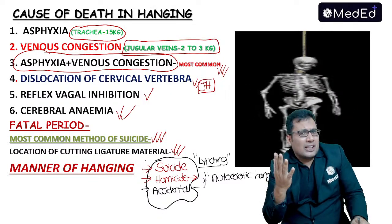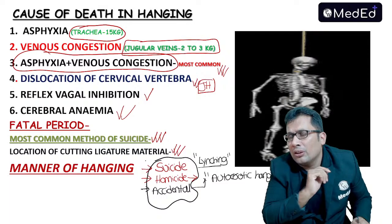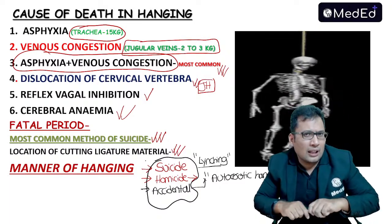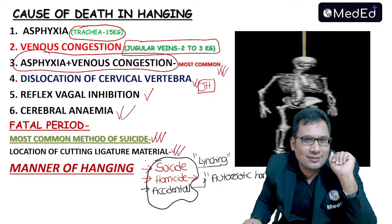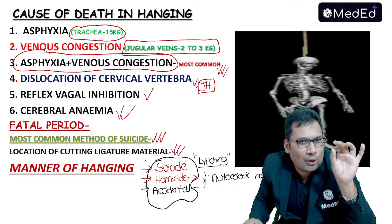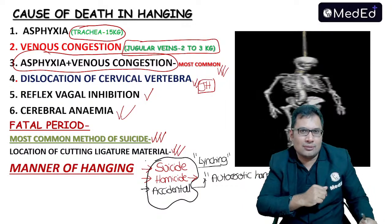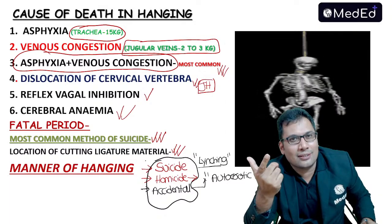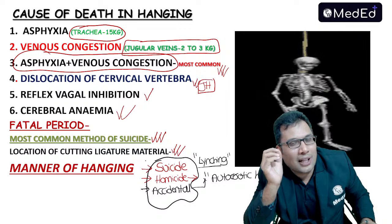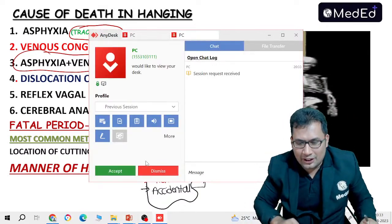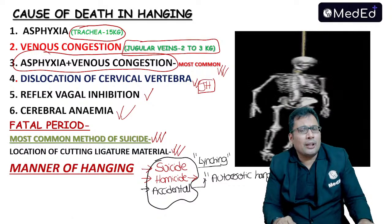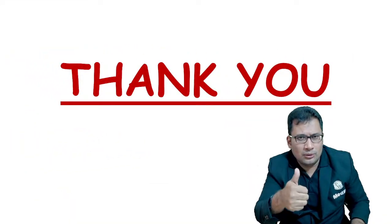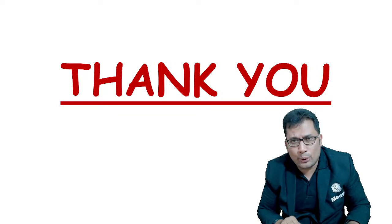To summarize key high-yield points: the surest sign of antemortem hanging is dribbling of saliva. The most important finding in antemortem drowning is cadaveric spasm with aquatic vegetation. The most important finding in antemortem burn injury is soot particles in the trachea, lung, and conjunctiva. That completes the topic of hanging. Thank you. If you have any doubts, message in the Telegram group or YouTube chat box.